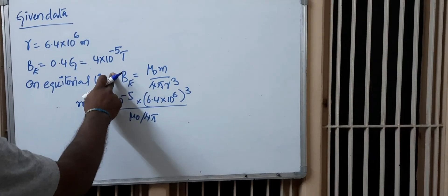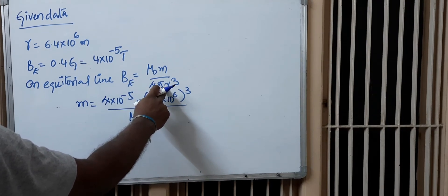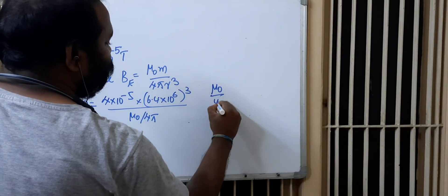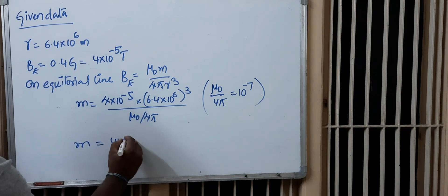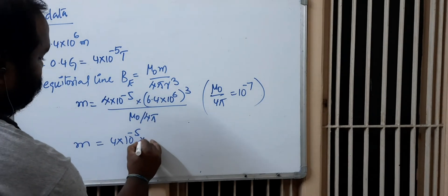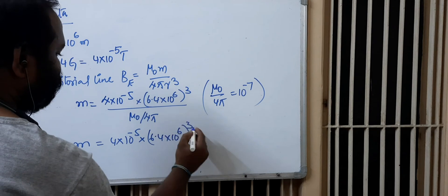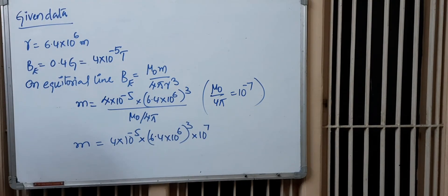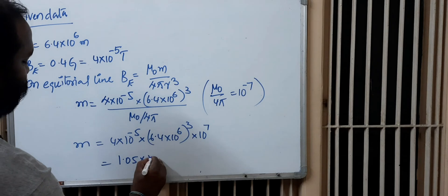Cross-multiplying and rearranging, we get m = B × r³ divided by (μ₀/4π). We already know μ₀/4π = 10⁻⁷, so substituting: m = (4 × 10⁻⁵) × (6.4 × 10⁶)³ × 10⁷. Moving 10⁻⁷ to the numerator as 10⁷, and combining powers of 10, we get approximately 10¹³ in the final calculation.